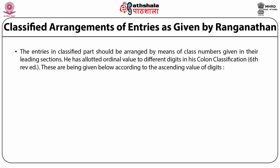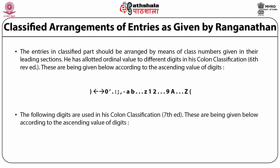The digits in Colon Classification Sixth Revised Edition are listed below in ascending ordinal value: arrestor, forward arrow, backward arrow, 0, inverted comma, dot, colon, semicolon, comma, dash, small a, small b through small z, 1, 2 through 9, capital A, capital B through capital Z, and starter.